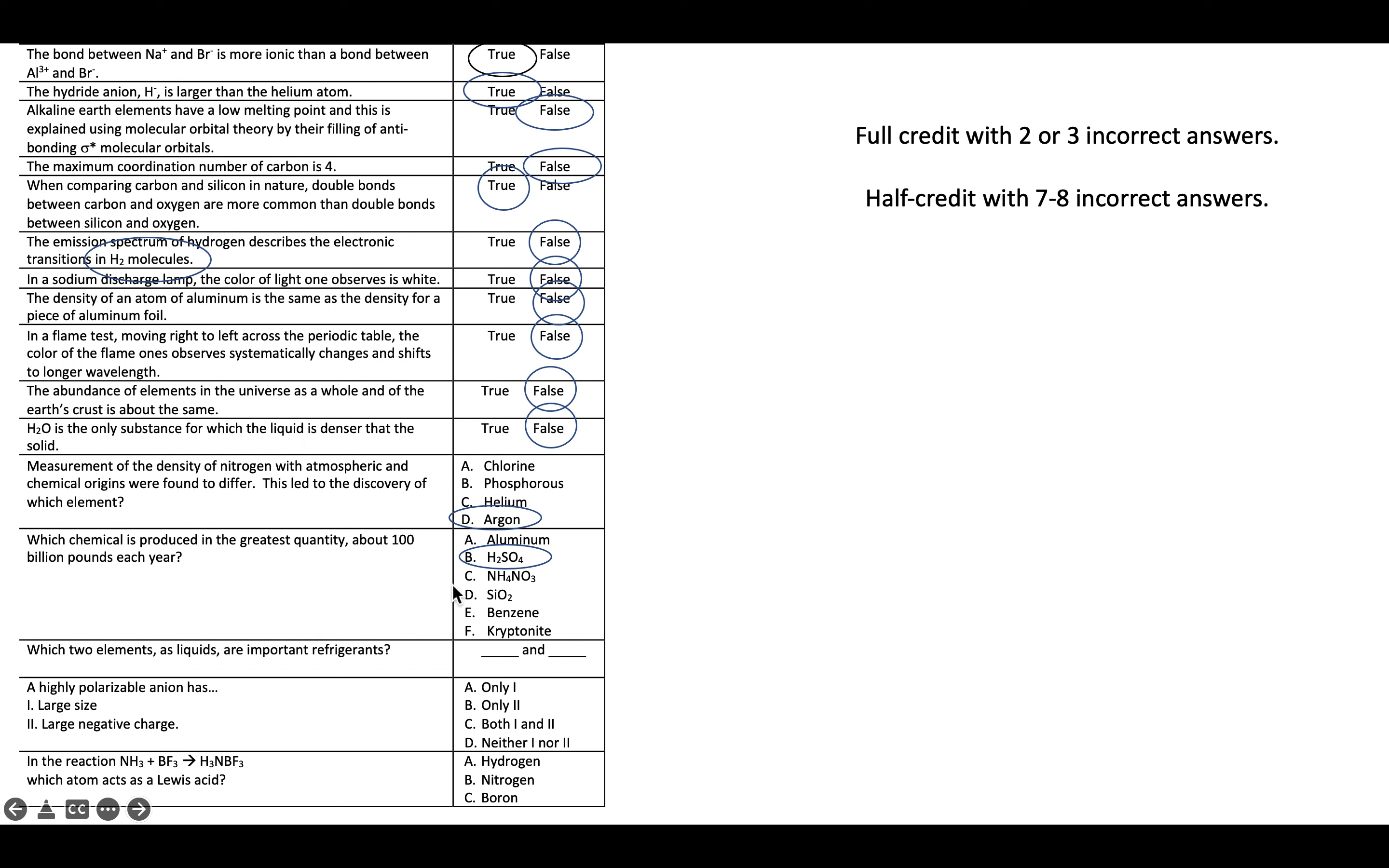The chemical produced in the greatest quantity, sulfuric acid, which is then used in fertilizer production to get your phosphorus. Liquid nitrogen, liquid helium. Very important industrial refrigerants for us. If I'm thinking of polarizable anions, a large size is the key. I gave credit for including that feature because I think I wasn't loving the question. You could argue in terms of aspects of the negative charge either way. So I was mainly looking for the size on that.